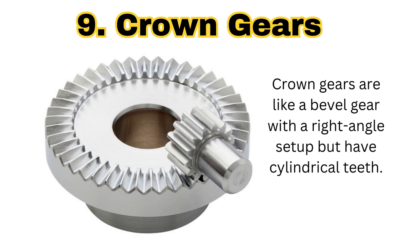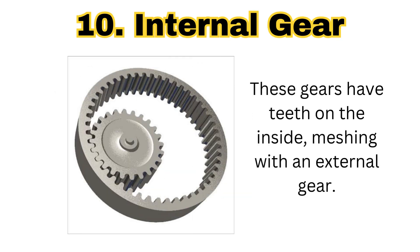The next gear type is the crown gear. Crown gears are like a bevel gear with a right angle setup and have cylindrical teeth. They are used in mechanical applications where the direction of rotation needs to change at a right angle — where we want to transmit power at 90 degrees, we use crown gears.